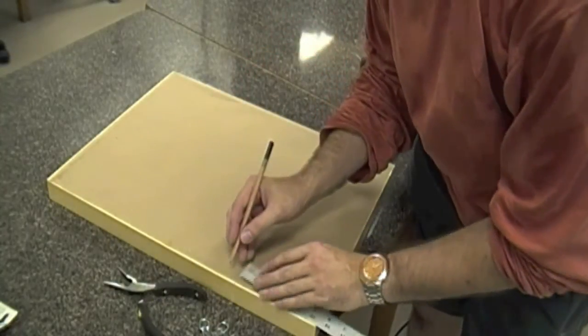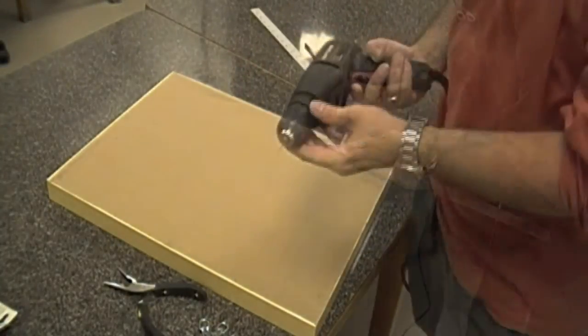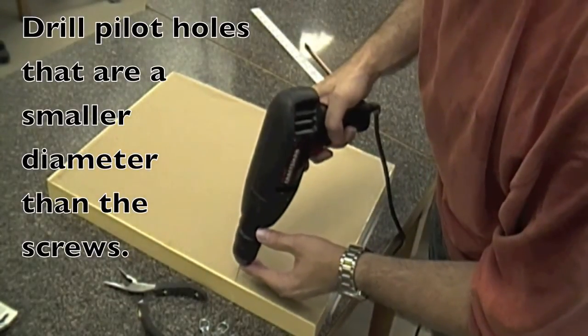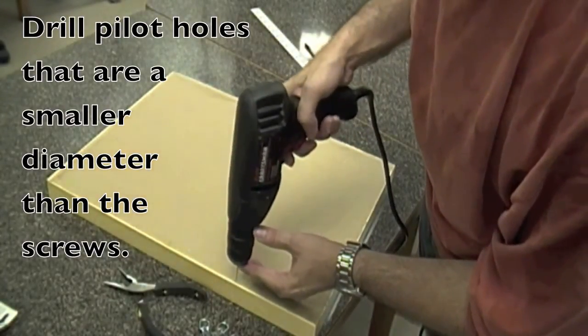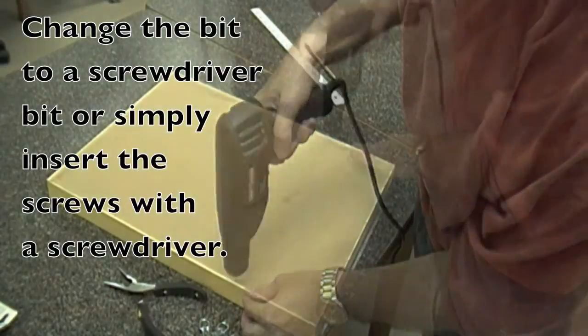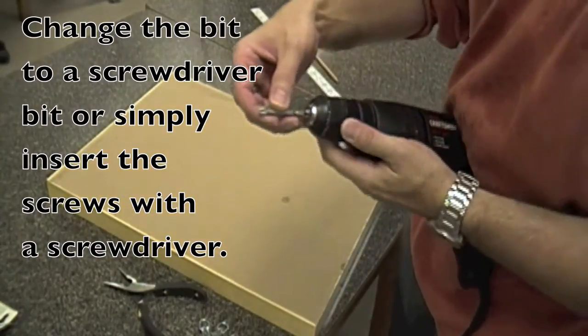Next you'll be measuring in from the top to put the hanger across there. Here I'm using a slightly smaller than what the screw is going to be pilot hole to drill that in there. I use D-shaped hangers